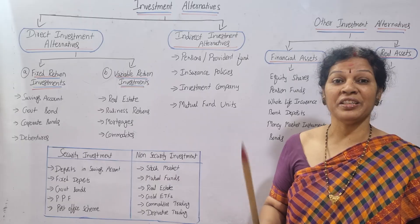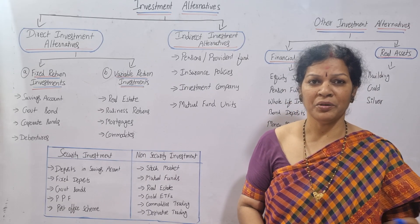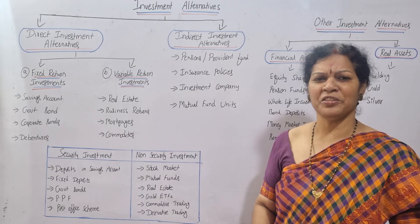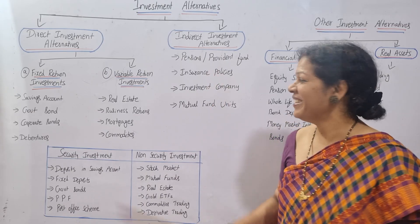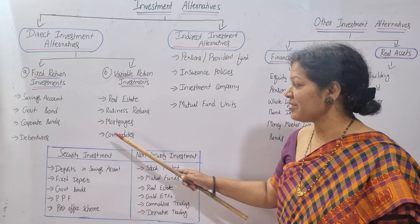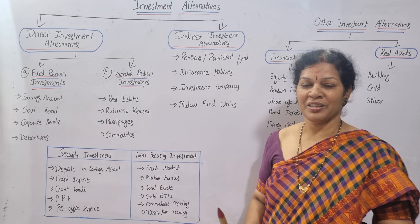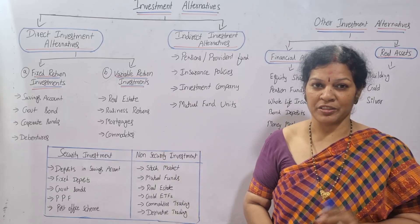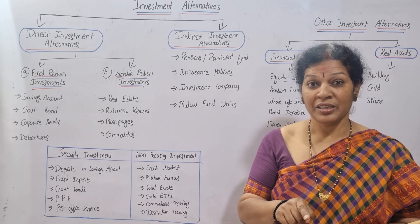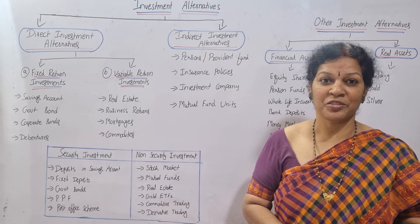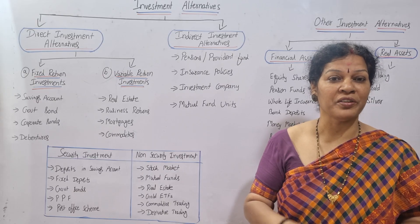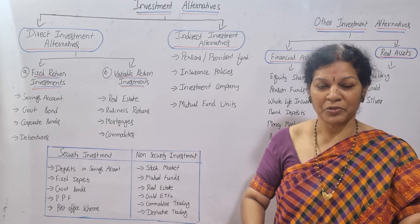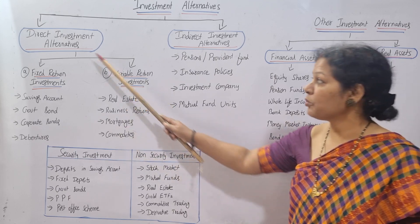The second type under direct investment is variable return investments — not consistent, no fixed amount. Examples include real estate, which has more flexibility and more changes: sometimes a boom, sometimes down. Business returns, mortgages — which are always risky — and commodities are also variable return investments. It's not always a loss; sometimes there are huge profits as well. Huge loss or huge profit — anything is possible. That's about variable return investments.